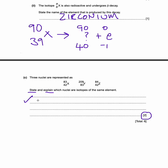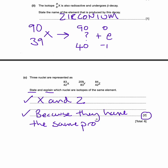So for your first mark, you need to say X and Z are isotopes. And the reason is because they have the same proton number. You don't need to state it, but I'm just putting it here. 42.